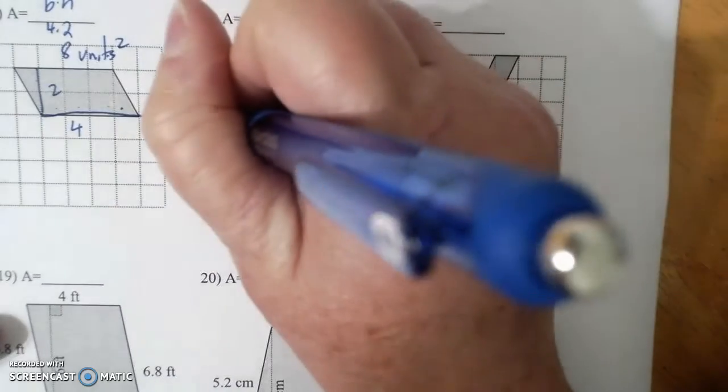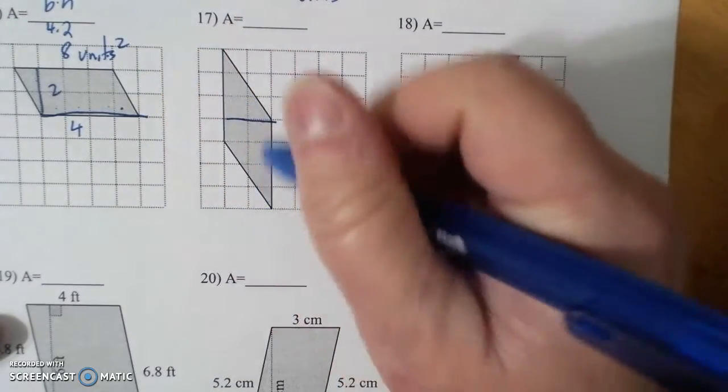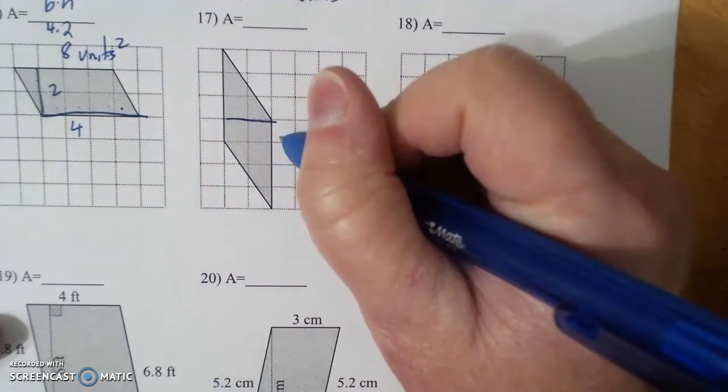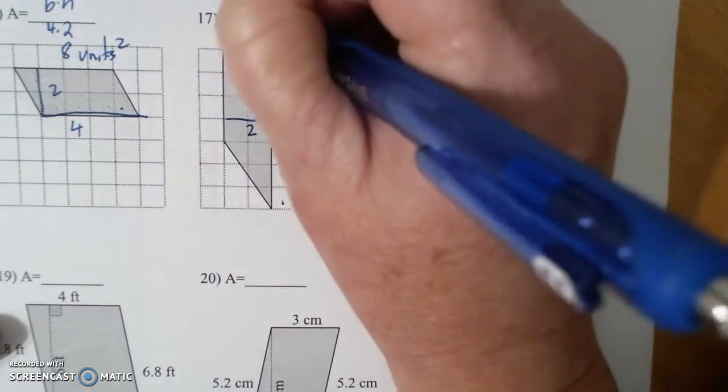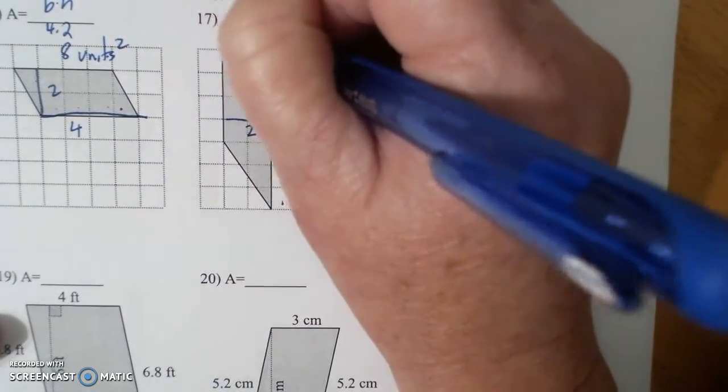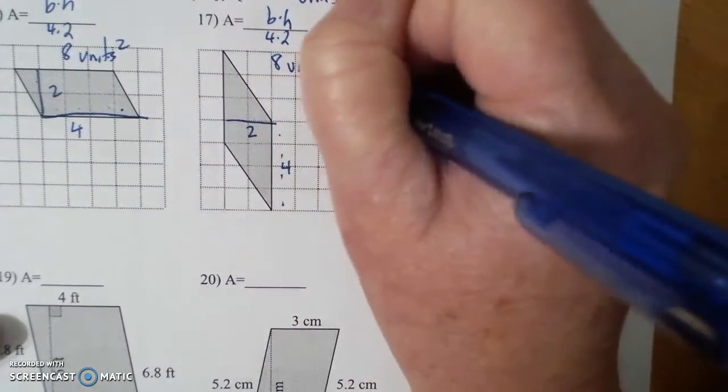So here's the area. I'm going to perpendicular. Cut that off and put it here. So this is 1, 2, 3, 4. Times 2. Base times height. 4 times 2. 8 units squared.